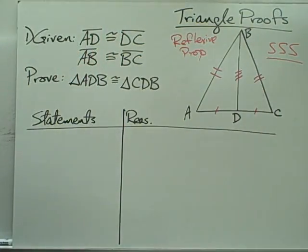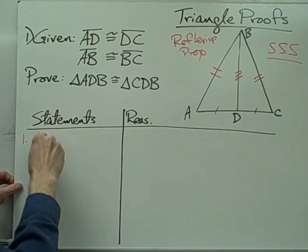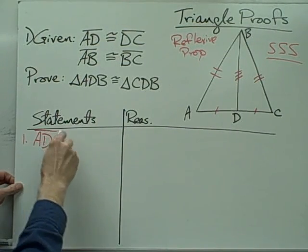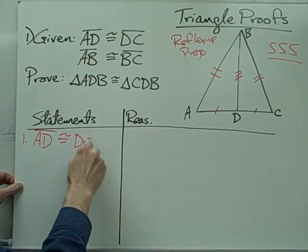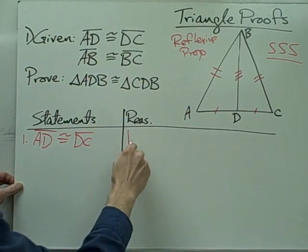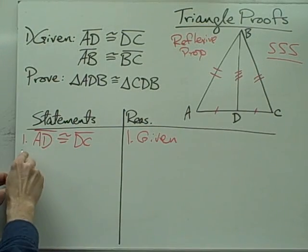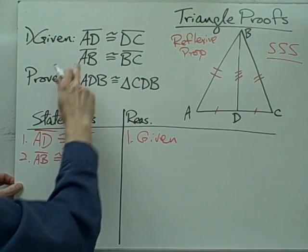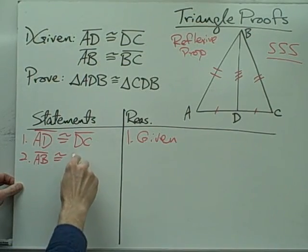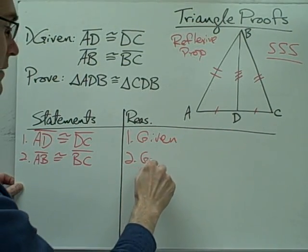So let's see what our proof is going to look like. Statement number one — I'm going to start with my given statements. I've got segment AD congruent to segment DC — that's given. I've also got segment AB congruent to segment BC — and that's also given.